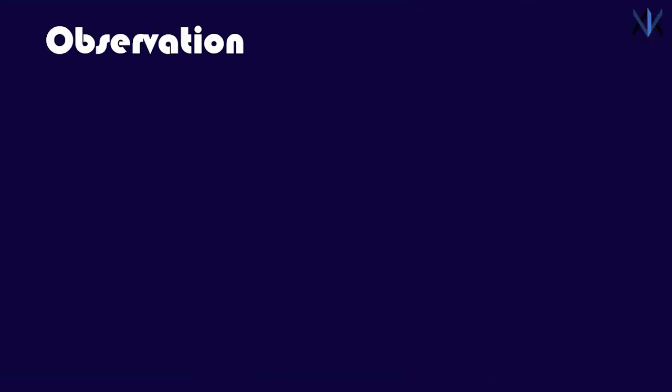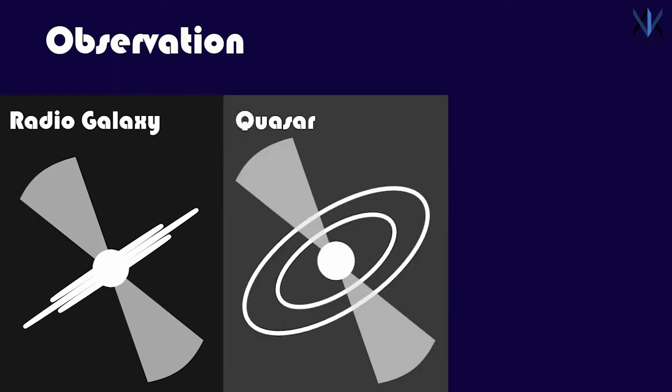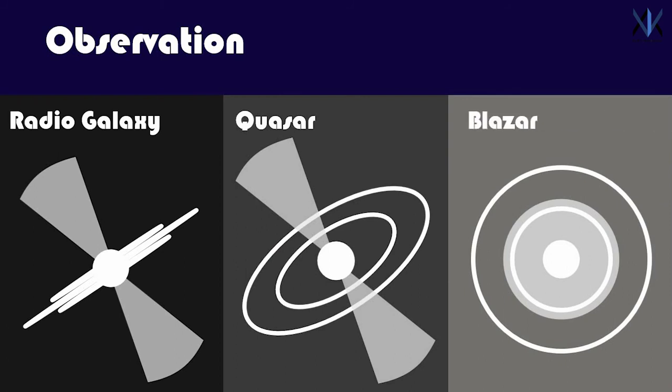Also, the exact appearance of this phenomenon depends upon our angle of observation. For example, if we see the jets perpendicular to our line of view, then we see a radio galaxy. If they are at an angle, then we see quasars. And finally, if they are pointed directly at us, then we see blazars.